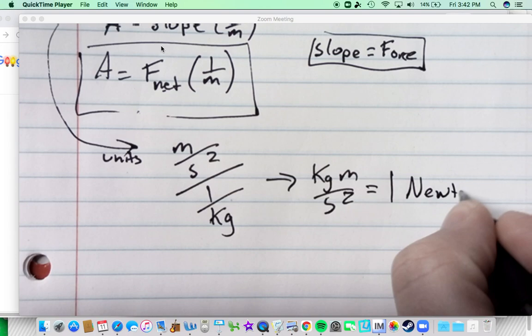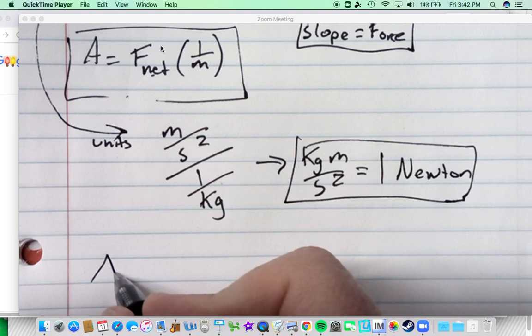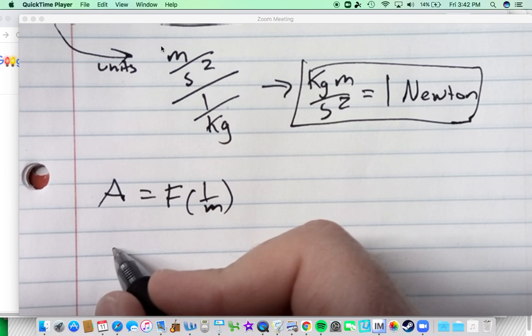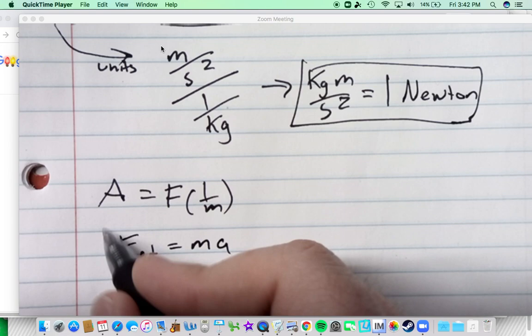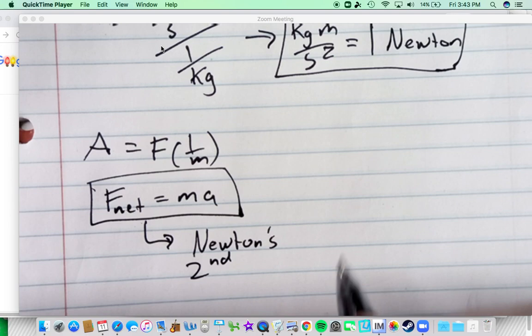So that's what a newton really equals: a kilogram meter per second squared. And so going back then to the formula, acceleration equals F times one over mass. Well, this is a pretty popular, famous, the most famous formula, which is the net force is equal to the mass times the acceleration. And so this was Newton talking about unbalanced forces. And he said if they're not balanced, and there's a force on it, it will accelerate.